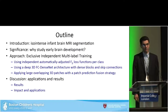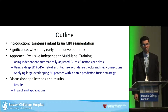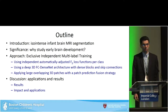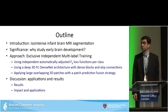First I'll give an introduction and talk about the significance of the problem. Then we will talk about the approach that we've developed, which includes independent automatically adjusted F-beta loss functions per class, a deep 3D FC DenseNet architecture with dense blocks and skip connections, large overlapping 3D patches with a patch prediction fusion strategy. Then I will talk about the results and the impact and applications of the approach.